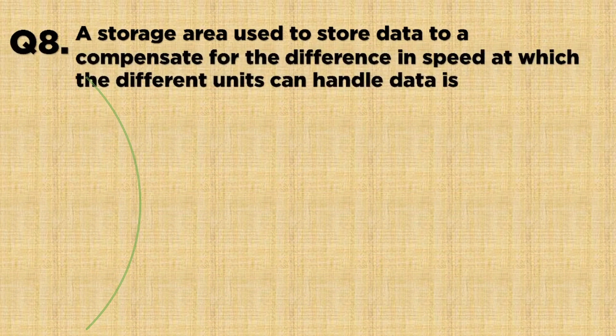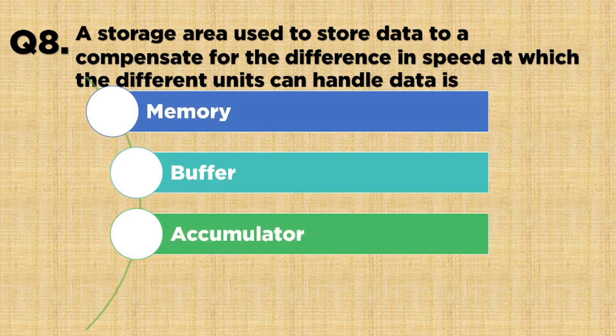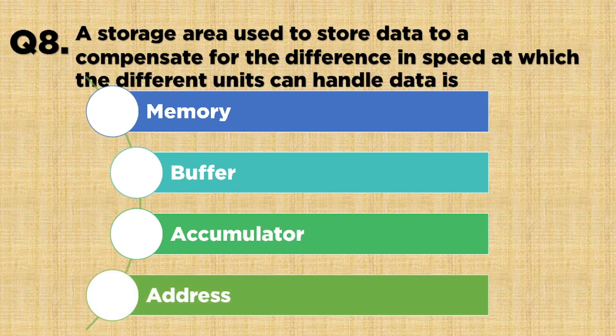Question number eight: a storage area used to store data to compensate for the difference in speed at which different units can handle data is — Option A: Memory, Option B: Buffer, Option C: Accumulator, Option D: Address. The correct answer is Option B: Buffer.